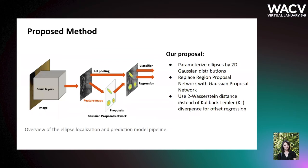This figure shows the architecture of our proposed model. We adopt the basic architecture of Faster R-CNN. An image is first passed to the convolutional layers for feature map extraction. We then use the Gaussian Proposal Network to replace the usual Region Proposal Network and propose 2D ellipse sets as Gaussian distributions.